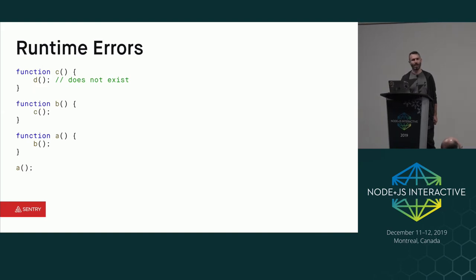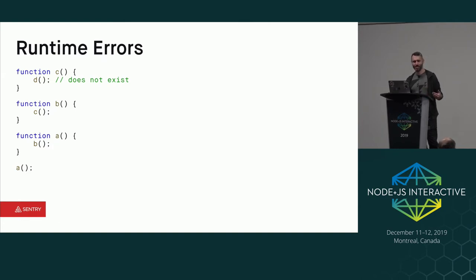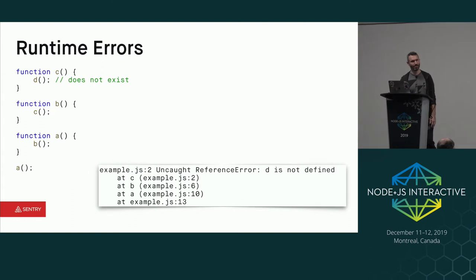Let's say you have code like the following — it's written sort of backwards, but it's kind of a cascading waterfall of function calls, where A calls B, B calls C, and C calls this function D, which doesn't exist. As we all know, that's probably not going to work. Something's going to happen — uncaught reference error: D is not defined. This is what you'd see — maybe your node application will just stop and throw this out, or you'll see this in the browser console.